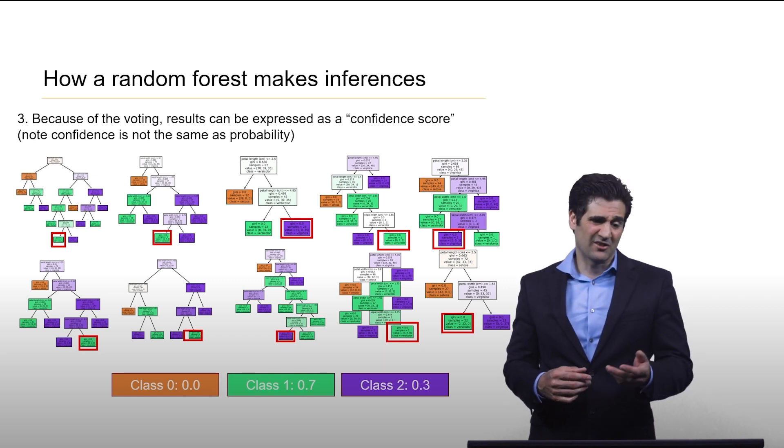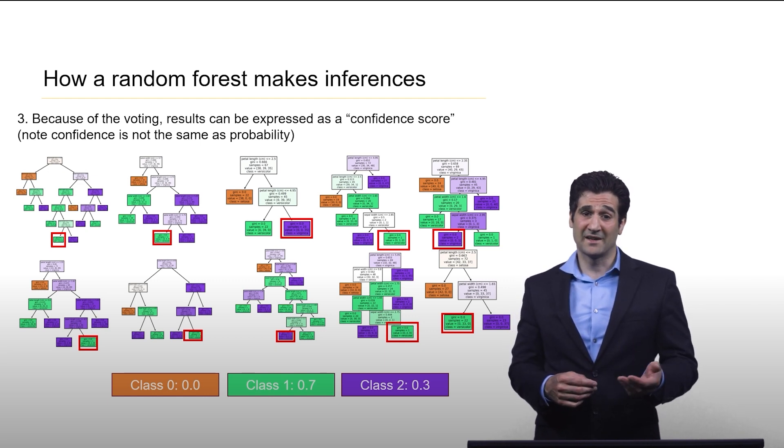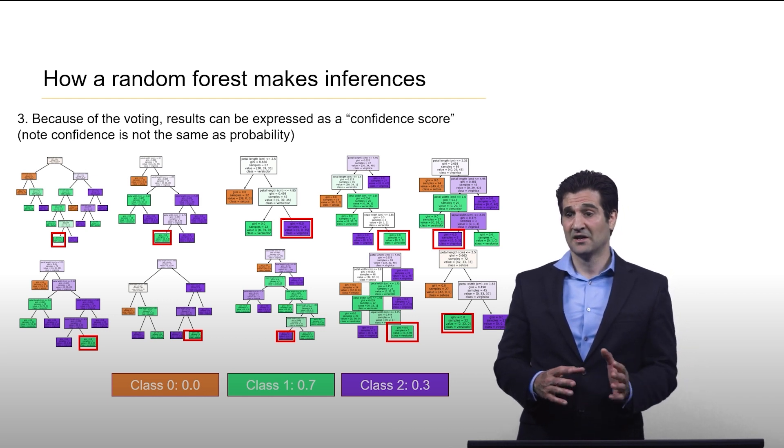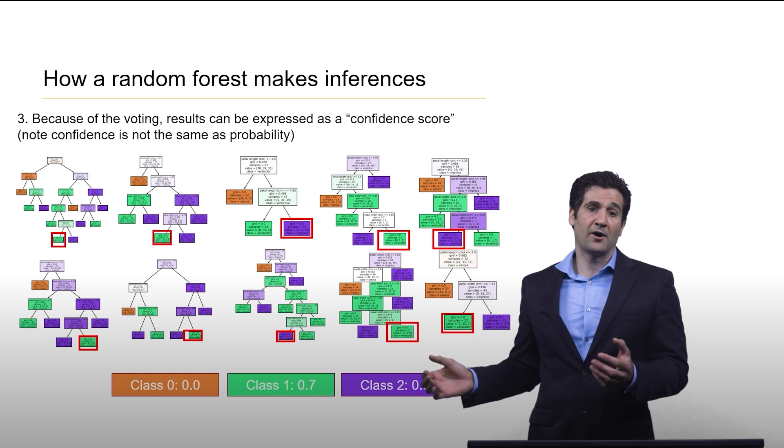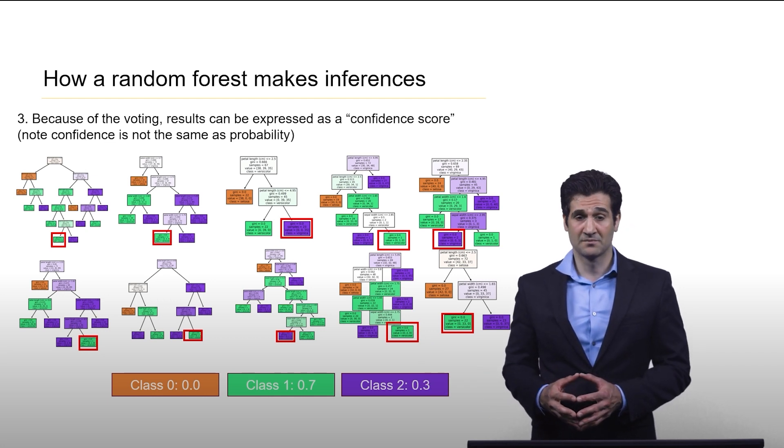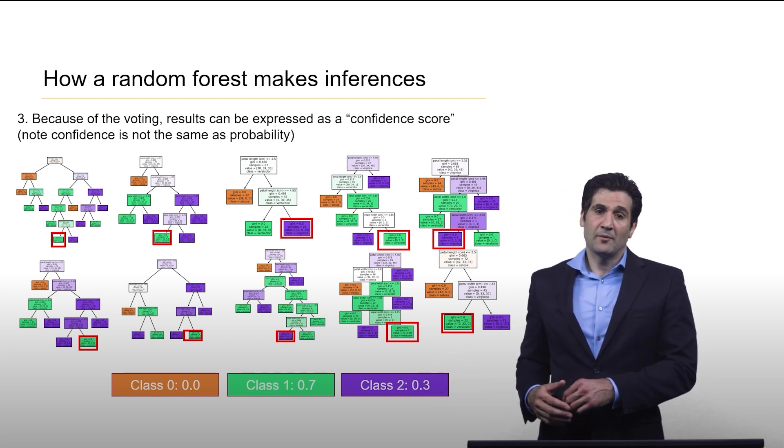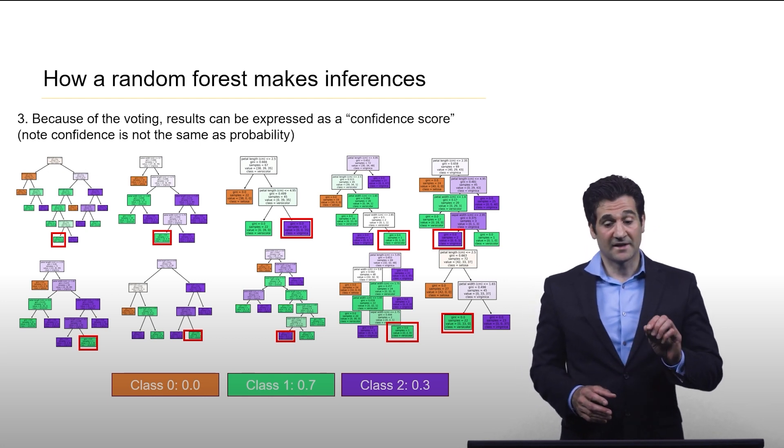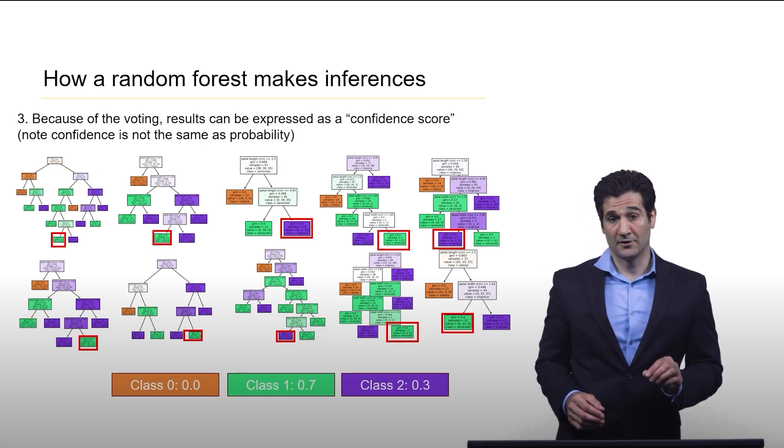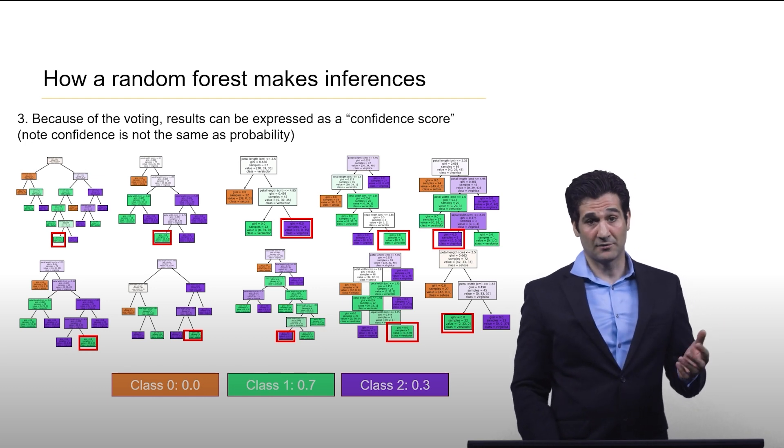Sometimes in a larger model, people may make an assumption that they say we're going to assume that the model gave us a probability distribution over classes. That may or may not be okay given the application, but just note that this is not a probability. It's a confidence. That's why we use that term.